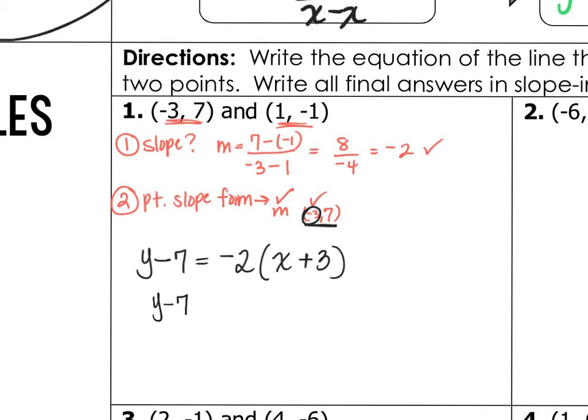So Y minus 7 is equal to negative 2X minus 6. By distributing the 2, now we add the 7 to both sides to get Y is equal to negative 2X plus 1. All we're doing here is layering everything we've learned and kind of seeing how everything is interconnected with each other.